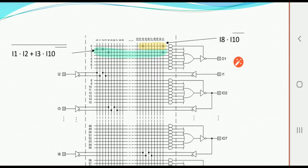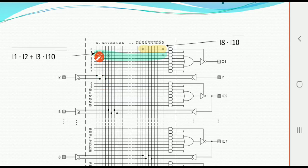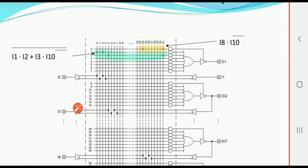The function implemented is: I1·I2 + I3·I10̄, where I1·I2 represents an AND function, I3·I10̄ represents another AND function with an inverter, and '+' represents the OR gate; the whole result is then complemented. Input line I1 is connected to P term 1 — the horizontal lines represent product terms. Similarly, I2 is connected to the same P term, and I3 and I10̄ are connected in the next P term line.